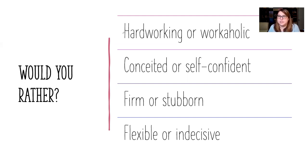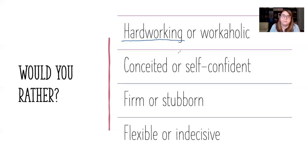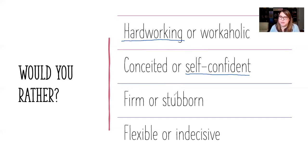When I look at my sets of words, I'll show you which I would rather be described as. My first set is hardworking versus workaholic. I definitely feel like I am hardworking and would rather be described that way. For conceited or self-confident, I don't want to be described as conceited, so I'd rather be self-confident. Firm or stubborn — this is a tricky one. I would rather be described as firm, though I can be pretty stubborn sometimes. I'll choose firm.